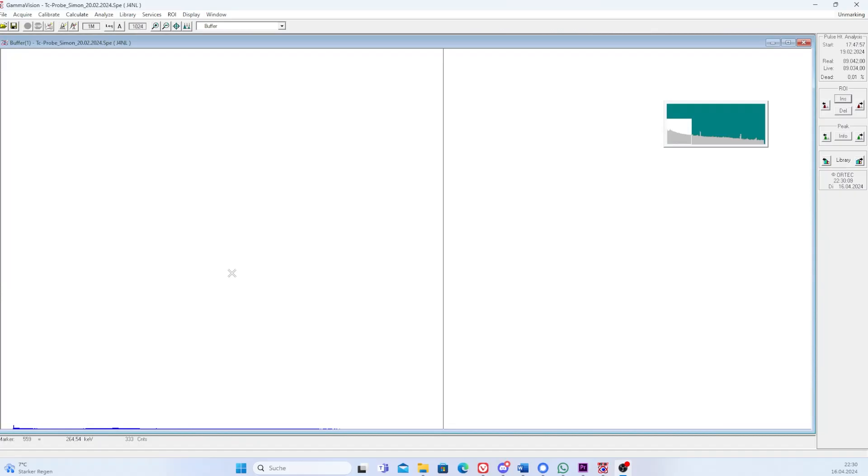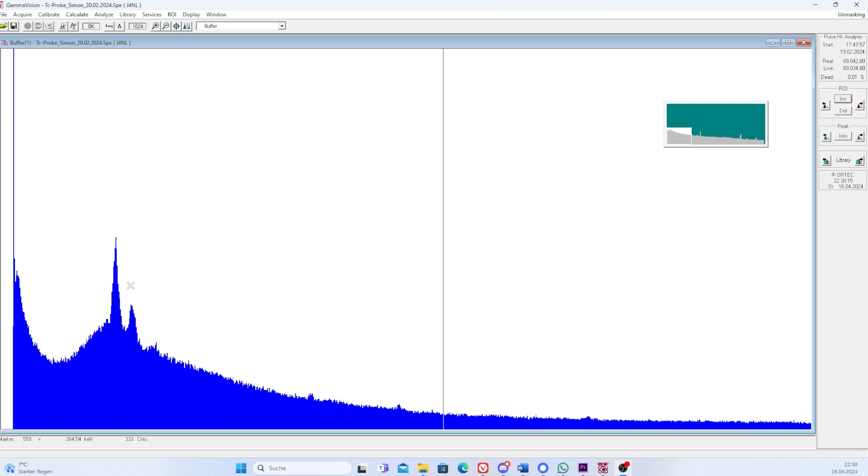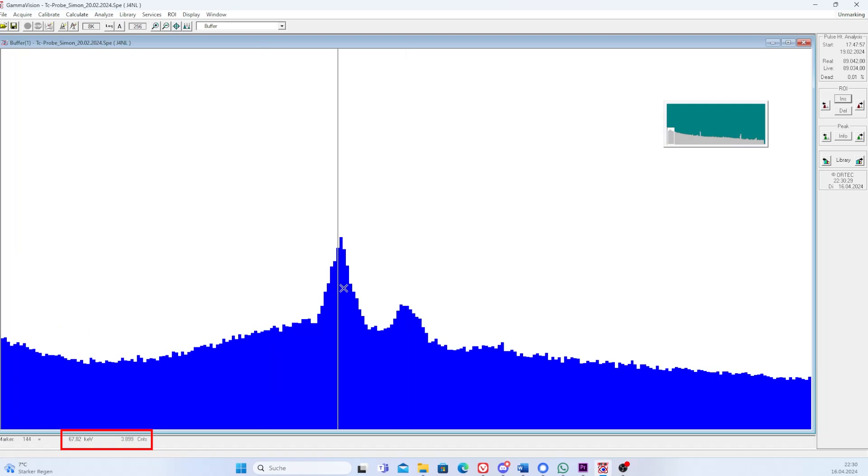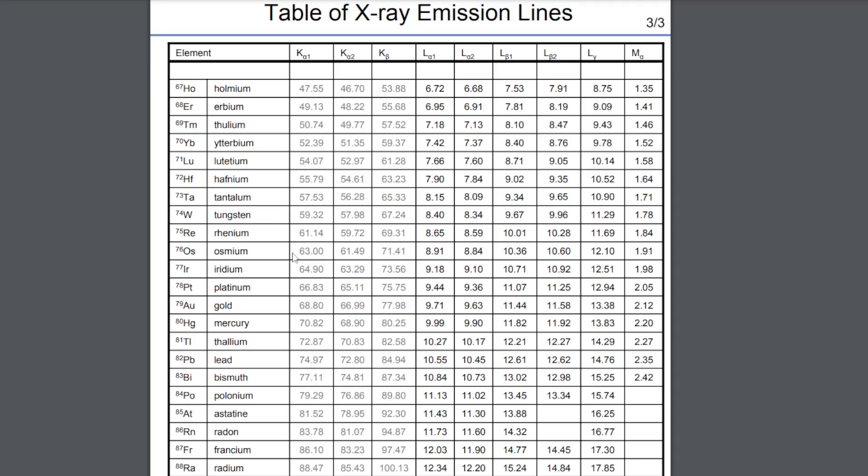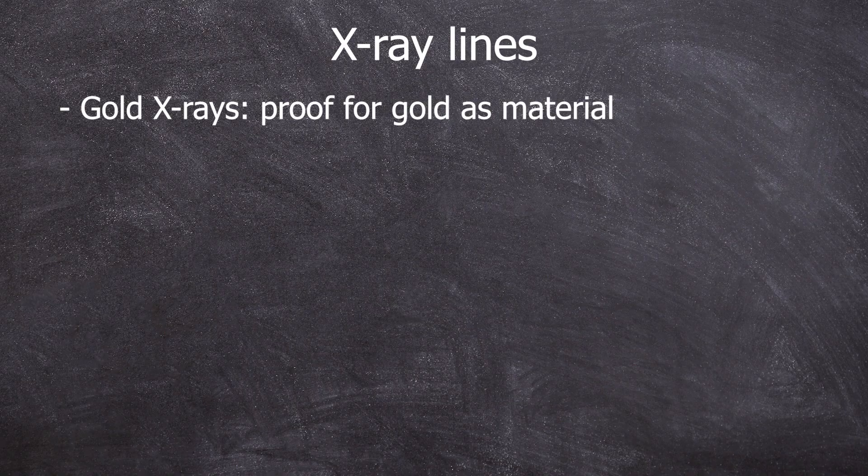And we can actually see two lines, which from the energy are in the XRF, X-ray range. At about 77 kiloelectronvolts and 68 kiloelectronvolts. Let's check and see. Aha, these are the gold K-alpha-1 and gold K-beta lines. Very nice. We are able to verify the deposition on gold.